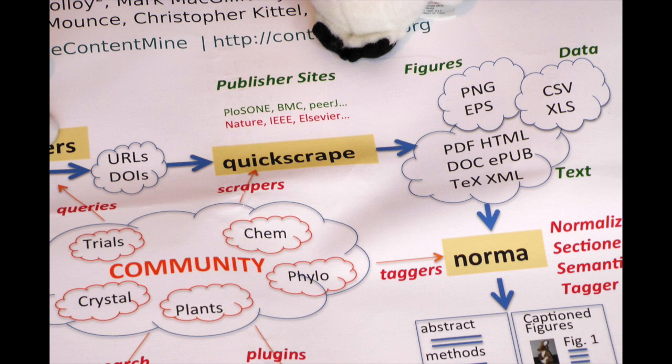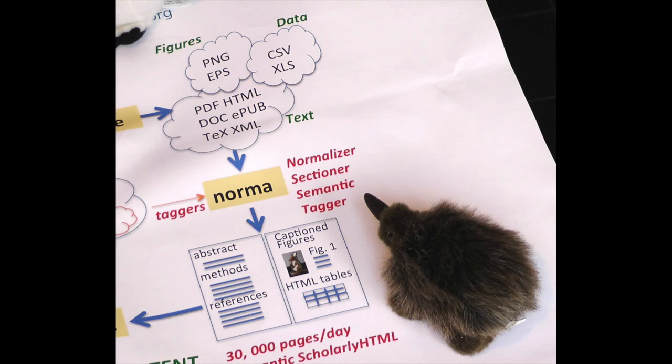Quickscrape retrieves everything for a paper on the web, including supplemental data, abstracts, bibliography and anything else that the publisher provides. Every publisher produces a different set of files — PDFs, HTML, XML, doc, etc. And Norma stitches them all back together into a single semantic form called scholarly HTML.